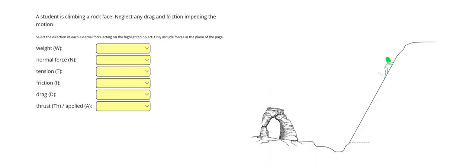All right, let's go ahead and take a look at another problem. So this one says, a student is climbing a rock face. Neglect any drag and friction impeding the motion. All right, so we are going to have our weight straight down as always. So it's really tempting to draw the weight crooked, but the weight is going to be straight down.